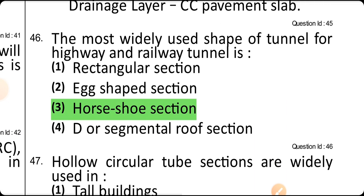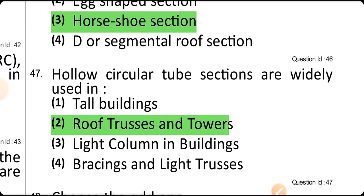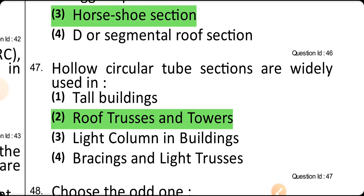The most widely used shape of tunnel cross-section for highway and railway tunnels is the horseshoe section. All circular tube sections are widely used in roof trusses and towers.